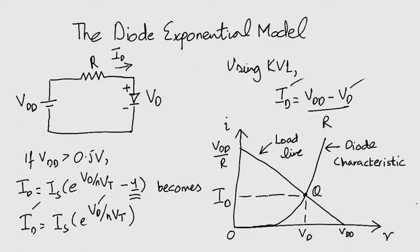They both intersect at one point, which is the solution of the two equations. This is called the Q point or the quiescent point. Look at the load line. The significance of the name will become clearer in subsequent modules.